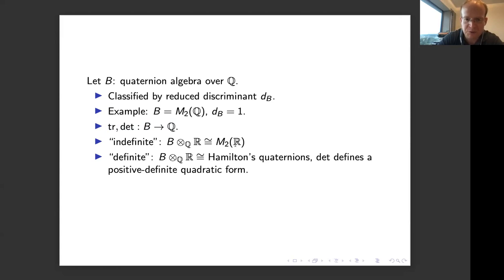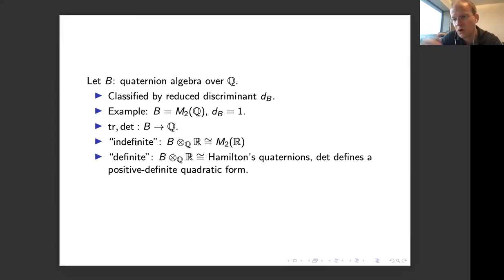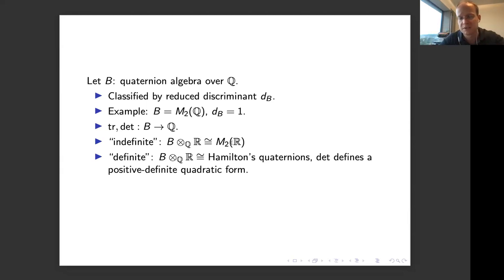In this example one defines trace and determinant maps taking values in the rational numbers satisfying natural properties. Quaternion algebras are basically algebras with analogous maps satisfying analogous properties. They come in two flavors according to what happens when you extend scalars to the real numbers: either you get the two-by-two real matrix algebra, called the indefinite case, or you get Hamilton's quaternion algebra, called the definite case. In the definite case, the reduced norm defines a positive definite quadratic form on B, looking like a sum of four squares.